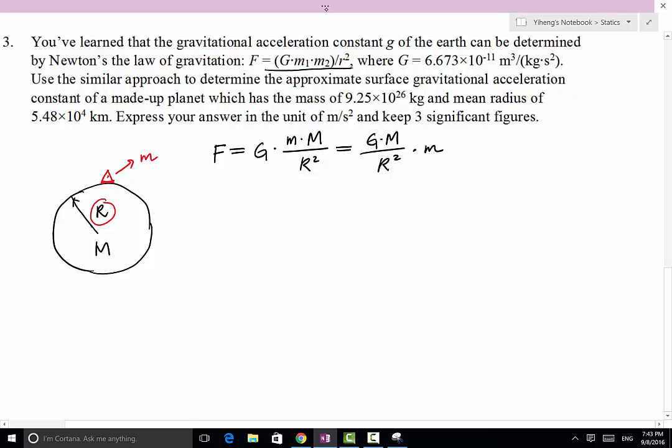Okay, so this term right here can be evaluated on the surface of Earth. You already know that it's about 9.81, but we can use another constant to represent it, which is small letter g.